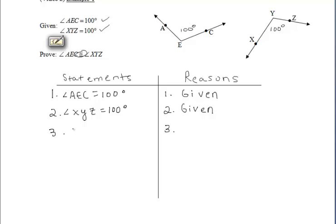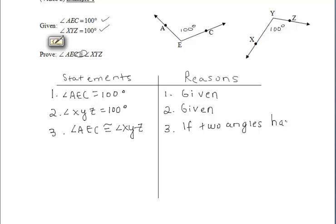We want to prove that those two angles are congruent. At this point we have enough information to say that they are. We're told that angle AEC and XYZ are two angles that have the same measure, so we can say that they are congruent. The reason is an if-then statement: if two angles have the same measure, then they are congruent.